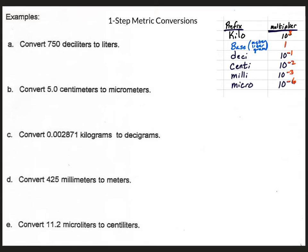This is page two of the notes. At the bottom you'll notice that there are these questions. We're going to be focusing on just the one-step metric conversions, and for that we need to look at the ones that go to liters, meters, or grams, or come from liters, meters, or grams. So we're not going to do the ones that have another part to their name — we'll do those on the next page. So that is just A and D.